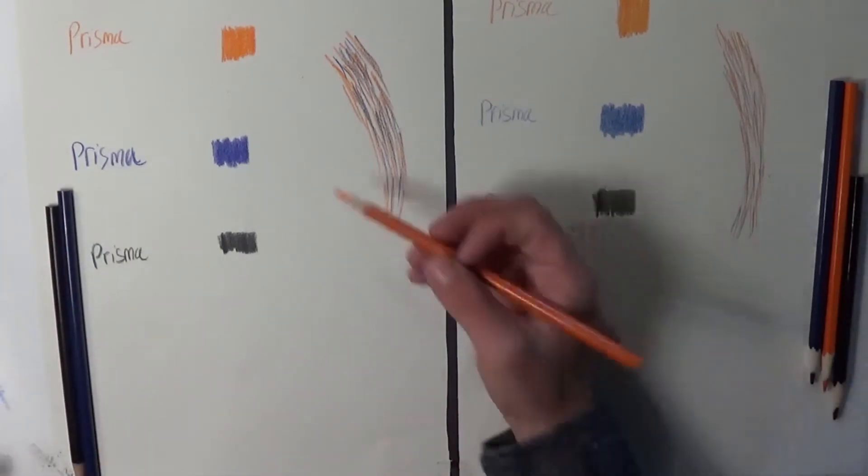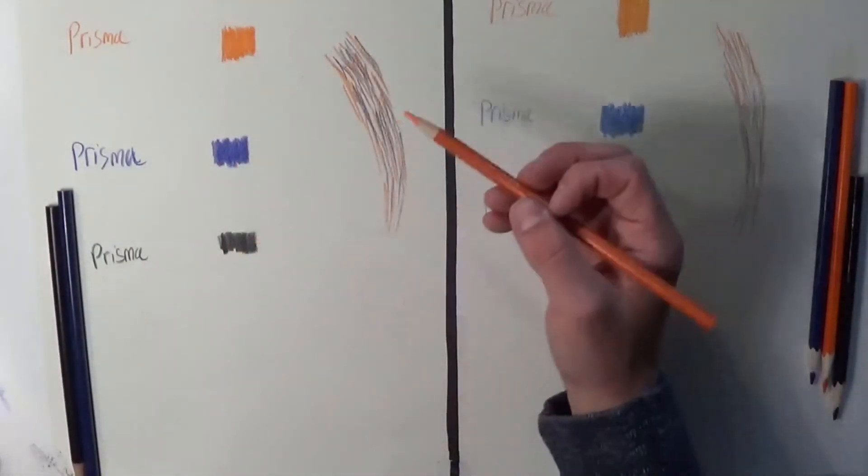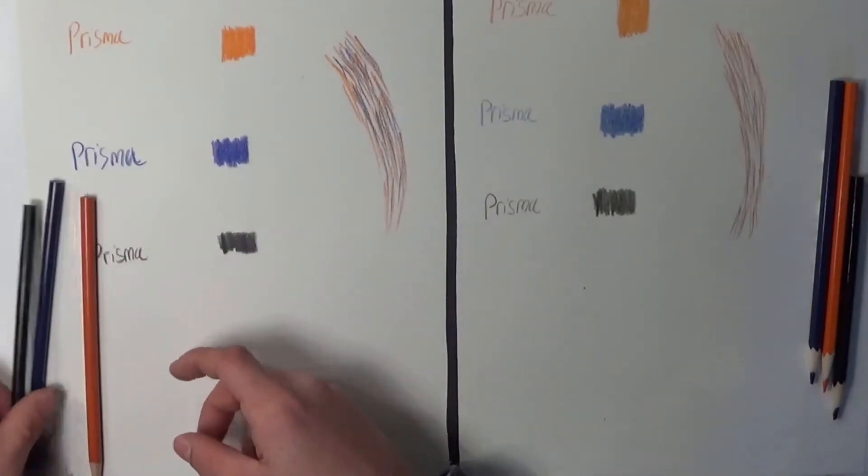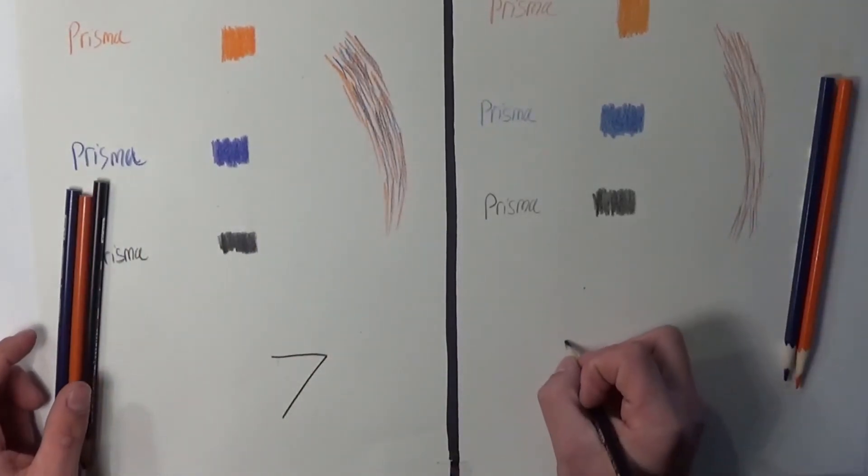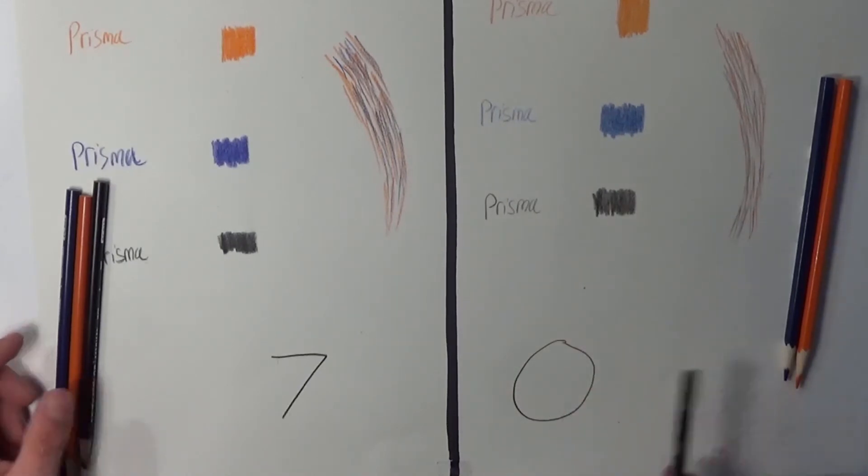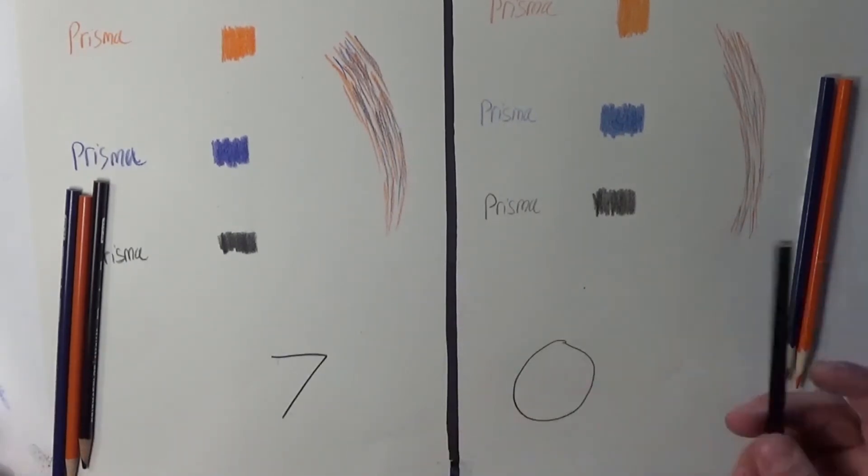So they have seven tests. Prismacolor pencils, seven. And the Muhai, zero. Even there. That one's so thin compared to that thick line.